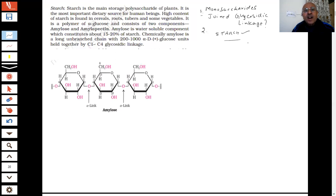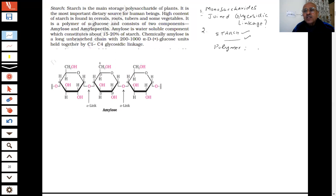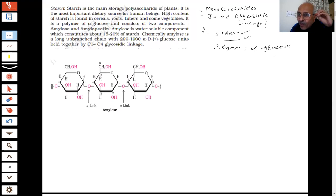What is starch? What is it made up of? What is a starch — is it a polymer of alpha or beta glucose? Starch is a polymer of alpha glucose. You have been told about alpha-D glucopyranose and beta-D glucopyranose — we have shown you both of these, and that is why the Haworth structure was drawn.